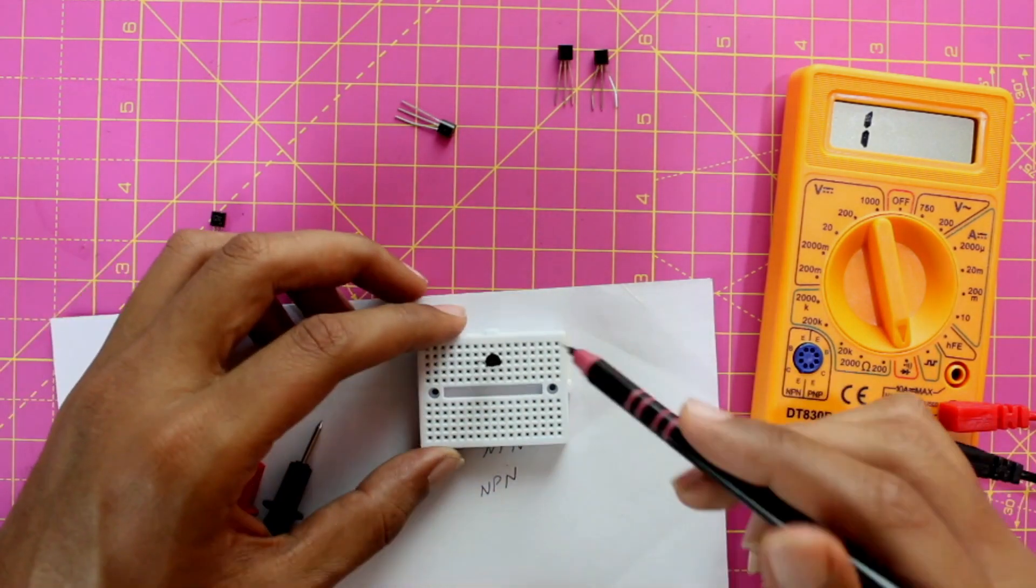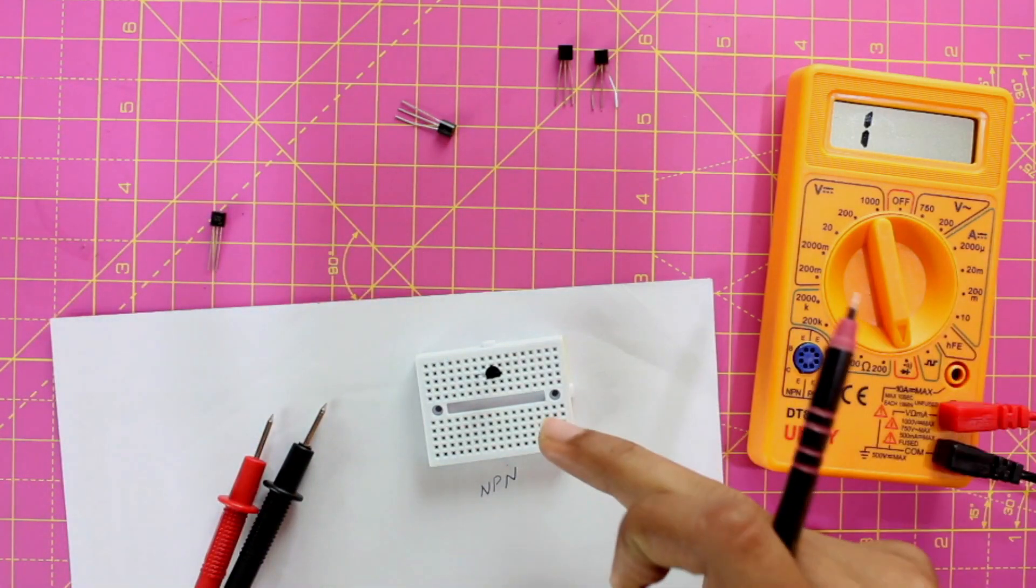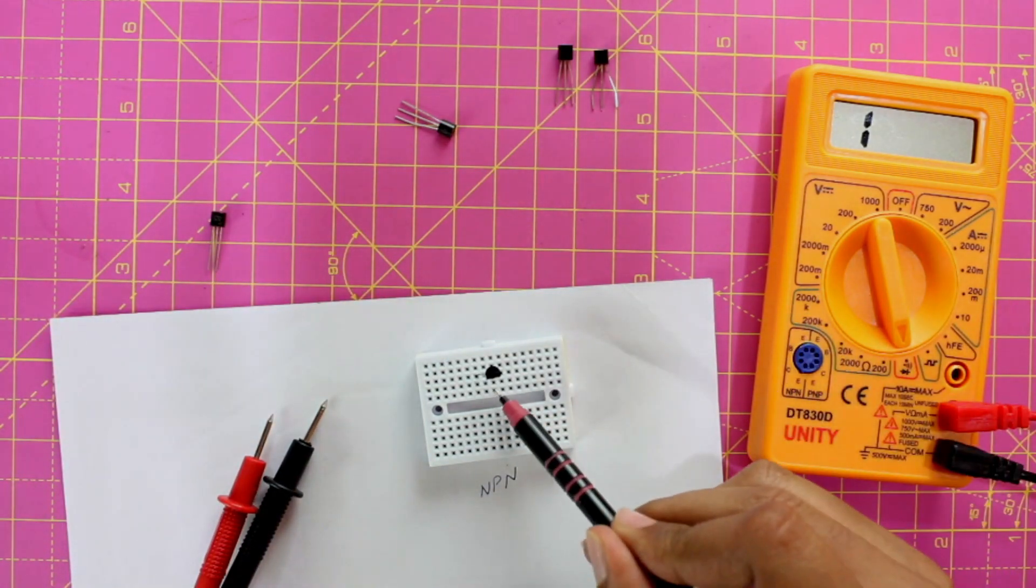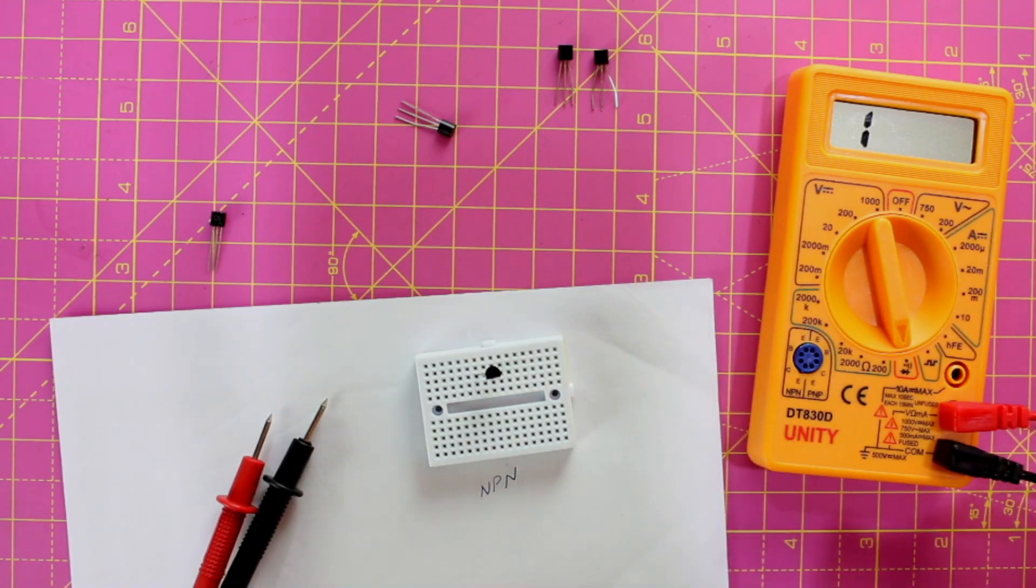So that is it. This is how we can find if your transistor is an NPN transistor or PNP transistor. Now we can use the same method to also find the collector, base and emitter pins of a transistor. To know that, click on the video over here. Thank you. Have a nice day.